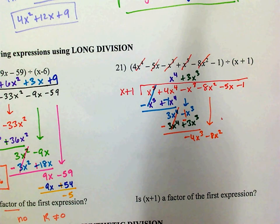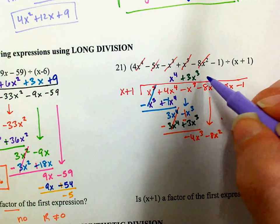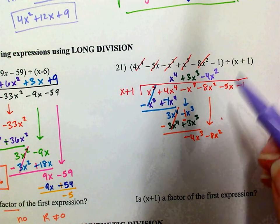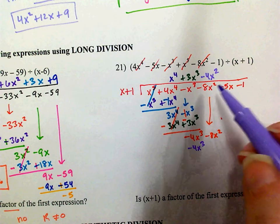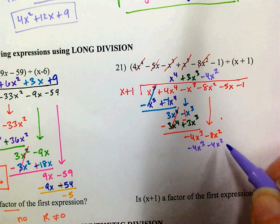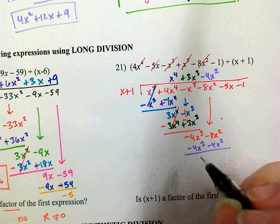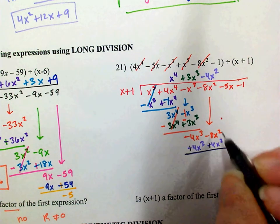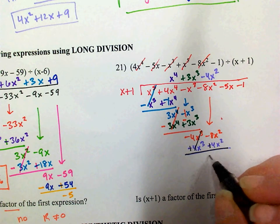I need negative 4x cubed. I've got x, so I need negative 4 and 2 more x's: negative 4x squared. Negative 4x squared times x is negative 4x cubed. Negative 4x squared times 1 is negative 4x squared. Subtract — change the signs to plus and plus. Those cancel out. Negative 8x squared plus 4x squared is negative 4x squared. Bring down the negative 5x.